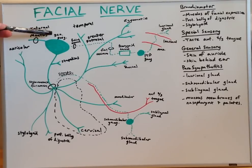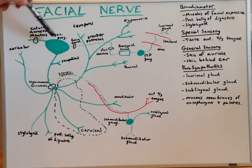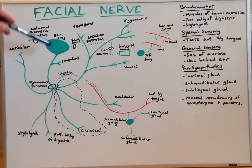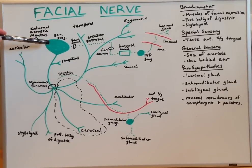Geniculate means knee. As you can see, these fibers make a 90-degree turn and head inferiorly from here, hence the name geniculate ganglion.